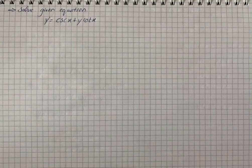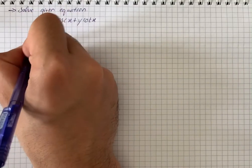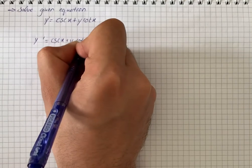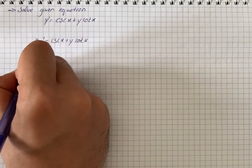Hey, we have to solve an equation. We have y prime csc x plus y cotex. From the given equation we have y prime is equal to csc x plus y cotex. For first order linear differentiation we have y prime is equal to csc x plus y cotex.